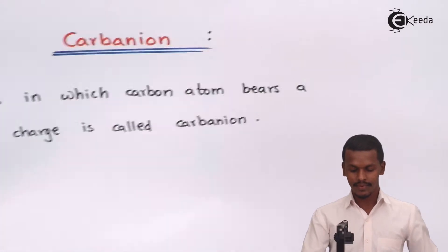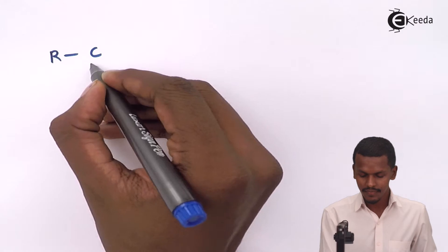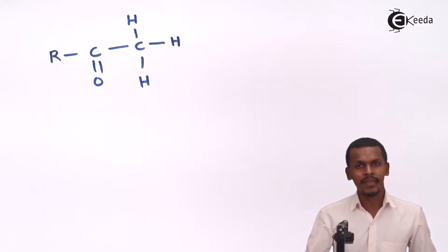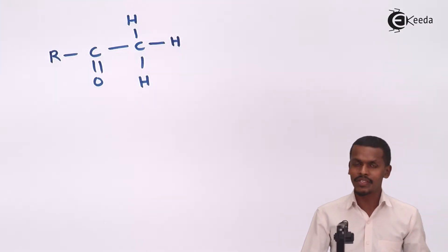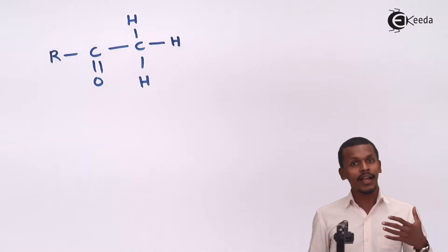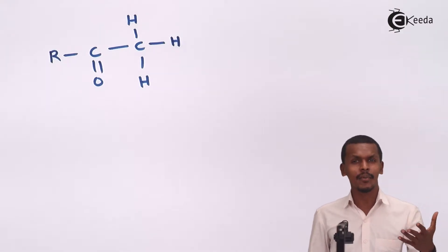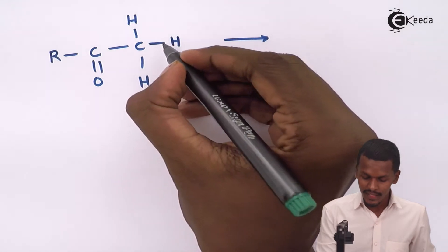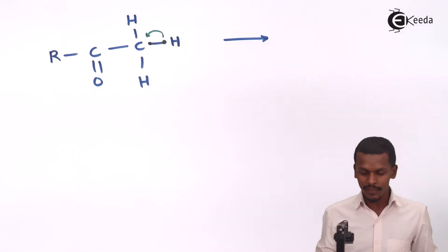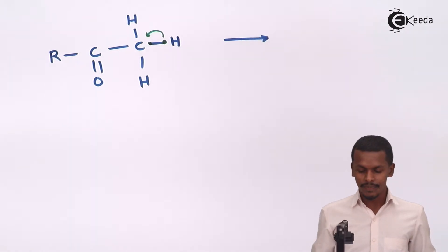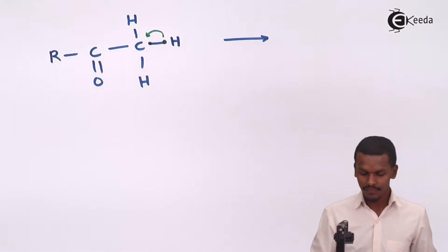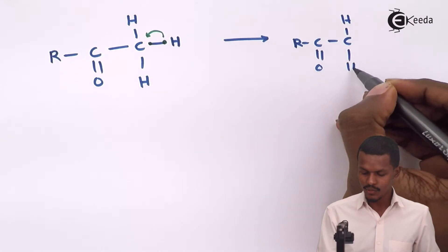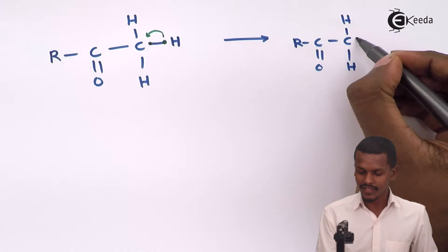Let me explain with an example. Suppose we have a particular compound, and the process of deprotonation has taken place — that is, the removal of the hydrogen atom as a proton (H⁺ ion). The product obtained is such that the electron of the hydrogen atom is acquired by the carbon atom, giving a structure with one extra electron on carbon, making it negative.